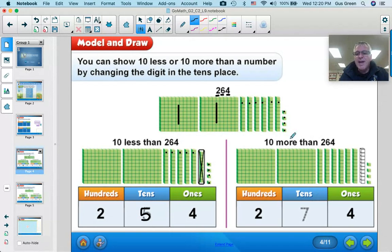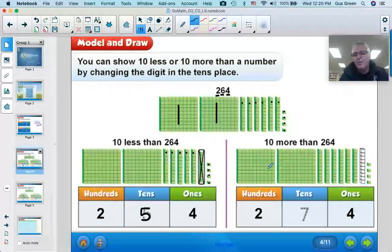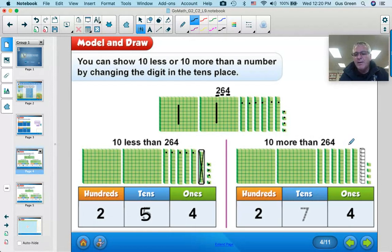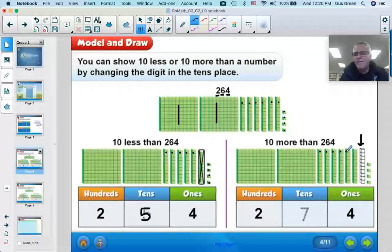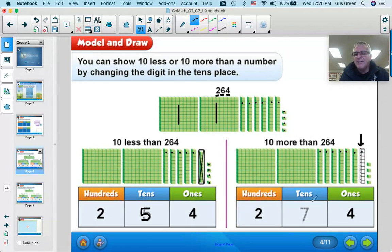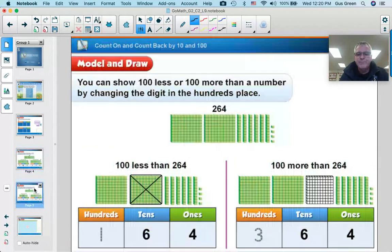Now to make it 10 more than 264, we take the same drawing, but we add just a ten. So now we still have 2 hundreds, but now we have 1, 2, 3, 4, 5, 6, 7 tens. And then, of course, we still have 1, 2, 3, 4 ones. So now you've got 10 more than 264 is 274. Let's try another.